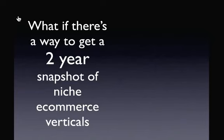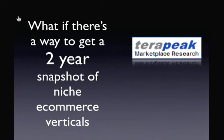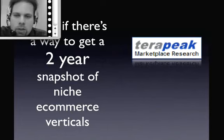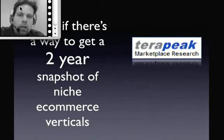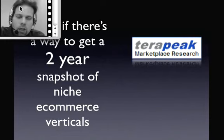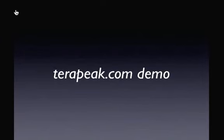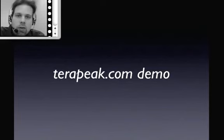The issue with using eBay as a tool is that the snapshot you get is only 30 days long. I started by asking the question: what if there's a way to get a two-year snapshot of a niche or ecommerce vertical? I did find one in this program called Terapeak. It's not free — it's about $15 a month. I definitely recommend it and we use it. This is not about what to sell on eBay specifically, but using eBay's research and data to figure out what to sell on ecommerce.